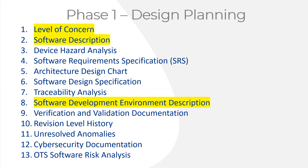If you're going to combine the requirements for software documentation from IEC 62304 with design controls from 21 CFR 820 and ISO 13485:2016 into one procedure, here is how the two sets of requirements mesh together and where the different documents fit within the different parts of the design process.